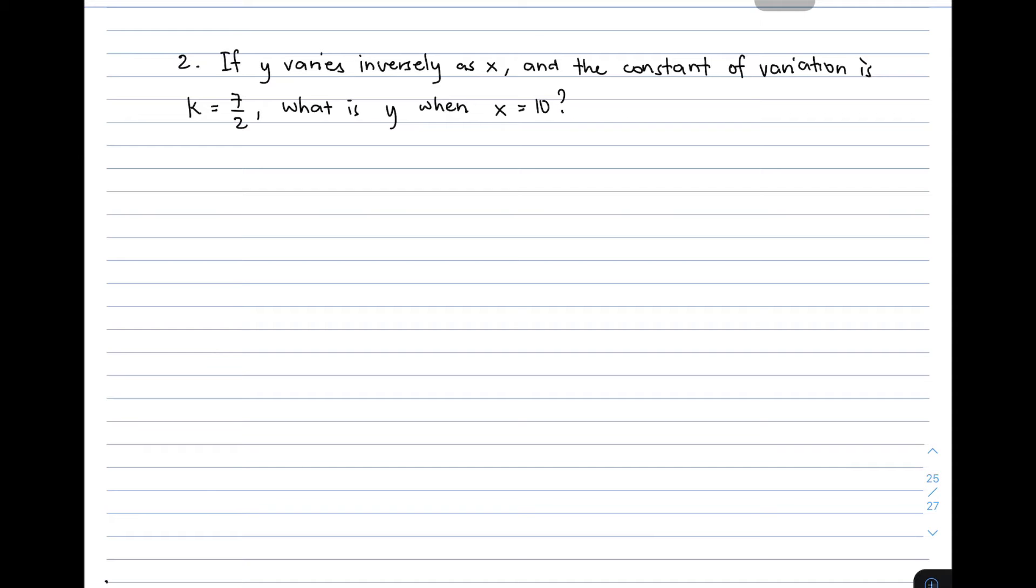Let me give you the second example in this video. If y varies inversely as x and the constant of variation is k is equal to 7 over 2, what is y when x is equal to 10? What I'm doing here is dividing this problem into 3 parts. For the first part, you need to create your own equation. Y varies inversely as x. To translate that into inverse variation general equation, that will be y is equal to k over x.